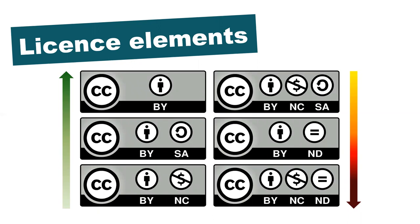Combinations of each of these symbols make up the six core licenses. Depending on which elements are added to a license, it can be very open or more restrictive. This flexibility helps creators to specify exactly what they're comfortable with when it comes to people reusing their work. However, it's important to remember that the underlying principle of these open licenses is to encourage reuse alongside offering copyright protection for the creators.